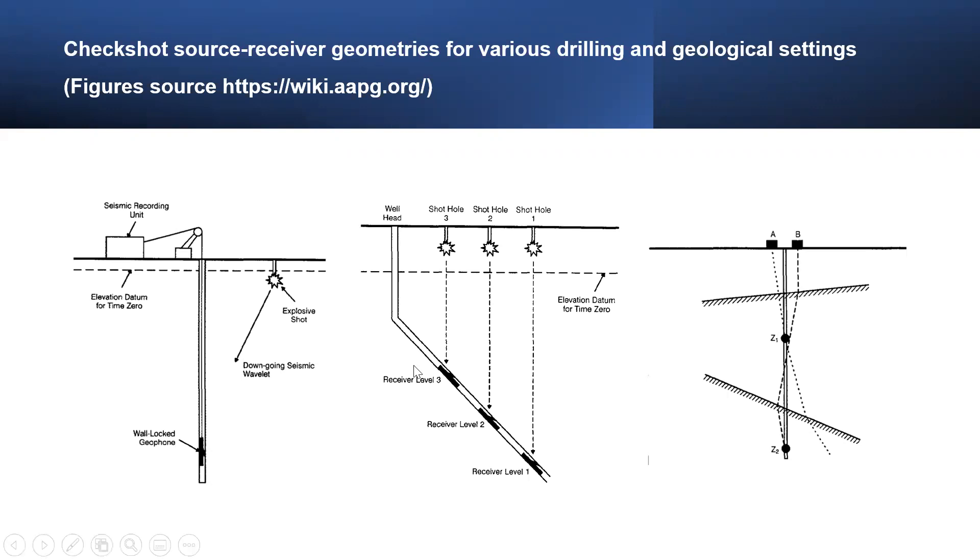The second figure in the center shows a deviated well. This source-receiver geometry is commonly used to record CheckShot in a deviated well. The time-depth calibration function and velocity analysis calculated from CheckShot measurements are made reliable if each source-receiver travel path is a vertical straight line rather than an oblique.